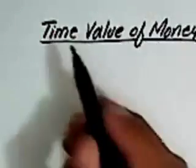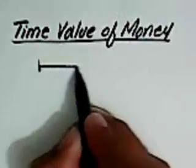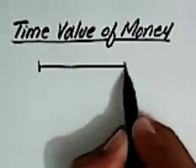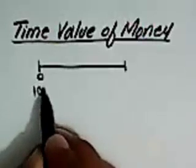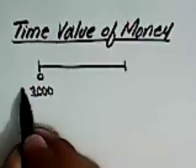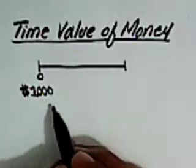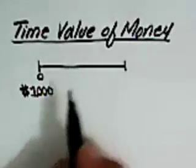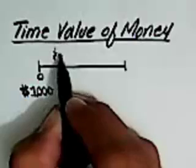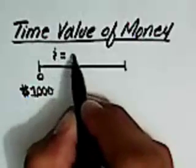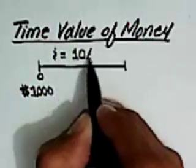For example, if we have one thousand dollars today and we have an opportunity to invest this one thousand dollars into a bank account which pays an annual compound interest of ten percent.